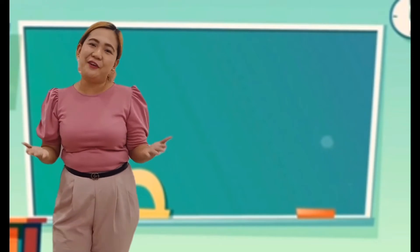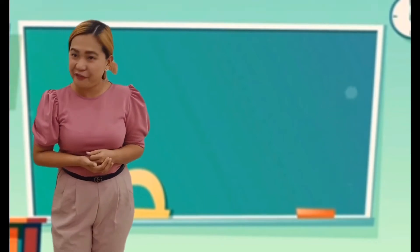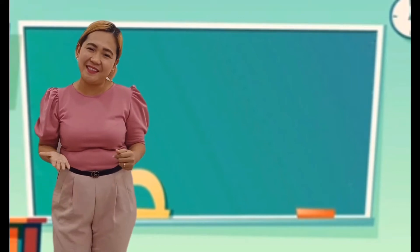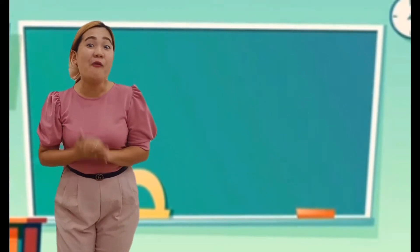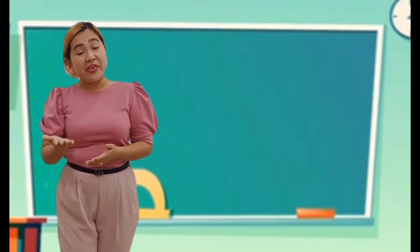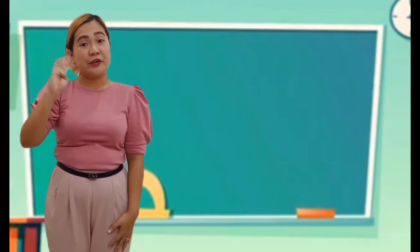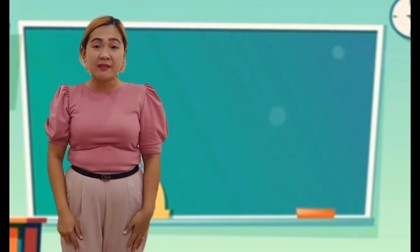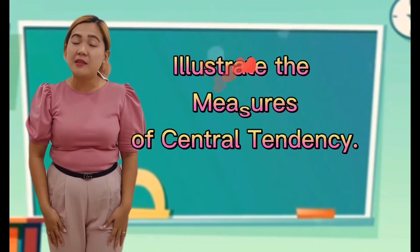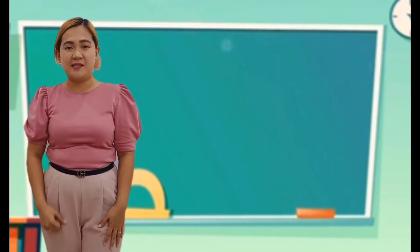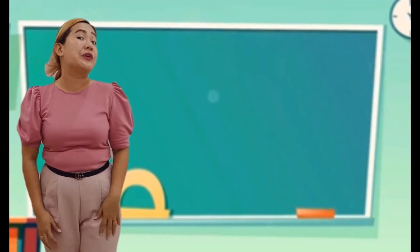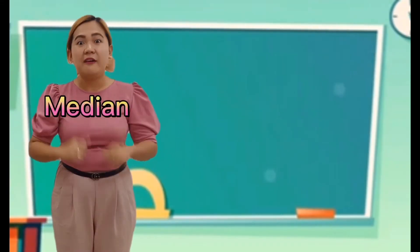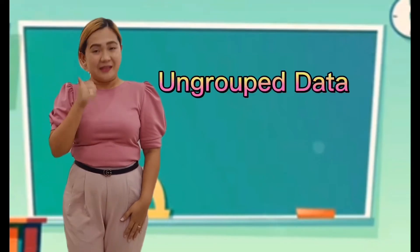That was so fun. Are you having a lot of fun? It sounds good. So let's get started now with our lesson. This video is all about Quarter 4, Module 6. Our first objective is to illustrate the measures of central tendency. Number 2, to calculate for the mean, the mode, and the median of the ungrouped data. So let's start now!